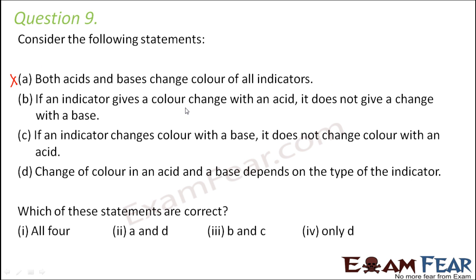If an indicator gives a color change with an acid it does not give a change with a base. Not really. Let's take the example of the china rose indicator. So you see the china rose indicator gives a pink color with acid and it also gives a green color with base. So it gives a color change with acid and it also gives a color change with base. But the colors are different. In one it is dark pink and in other it is green. So this is also incorrect.